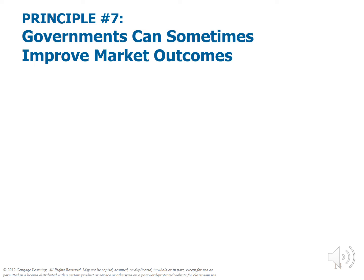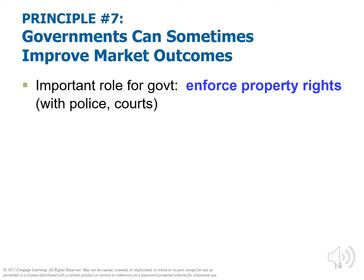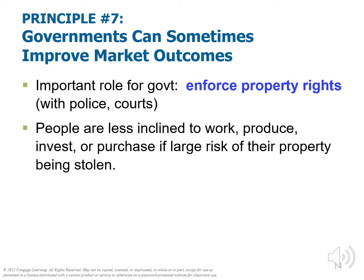Governments can sometimes improve on market outcomes. Although markets generally do a good job solving economic problems, there are some cases in which they're not enough and it's important for governments to step in. All economists agree that there's at least one fundamental way governments must act for markets to work properly: enforce property rights, also known as the rule of law. To enforce property rights, we need legal structures, police, courts, and legislators. People are less inclined to work, produce, and invest if there's a large risk of their property being stolen. You wouldn't invest in building a business if you knew it would be expropriated as soon as it became profitable. Protecting property rights protects the incentive to build and produce.